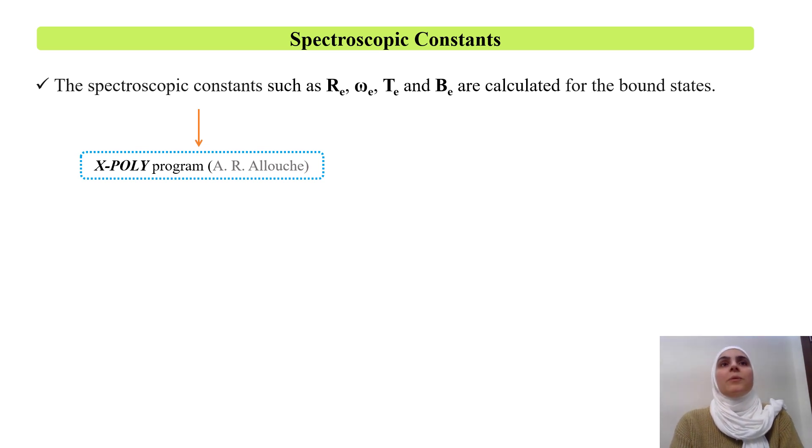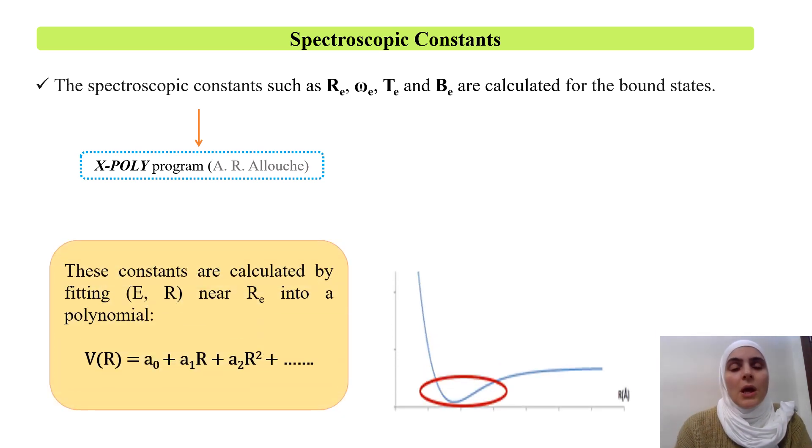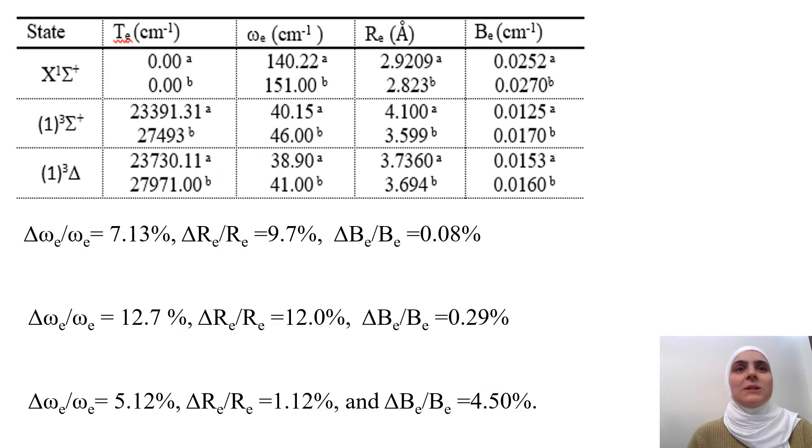We examined the Re of the excited state. We couldn't find a value near that of the ground state. Therefore, the first and the main criteria of the laser cooling is not verified in our molecule. So the molecule which we are studying is not a candidate for the direct laser cooling application. For the ground state of TLI, the comparison of the spectroscopic constants in the present work approach the values given in literature with percentage of 7.13% for omega e, 9.7% in Re and 0.08% for Be.